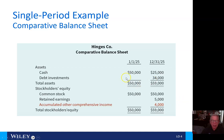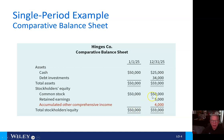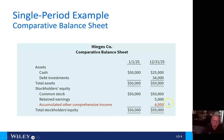In the comparative balance sheet between the beginning and end of 2025, we had stockholders' equity, assets, and common stock of $50,000 at the start. At year-end we had $25,000 in cash and $59,000 in total assets, $50,000 in common stock, $5,000 in retained earnings, and $4,000 of accumulated other comprehensive income shown in red.